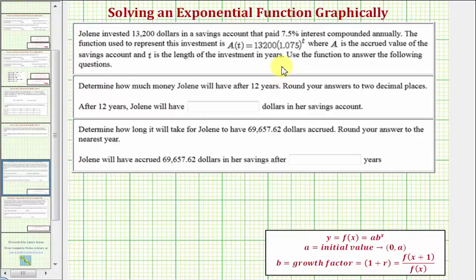We just solved this problem graphically using the TI-84 graphing calculator. Now we'll solve this using the grapher from Desmos.com. Jolene invested $13,200 in a savings account that paid 7.5% interest compounded annually.